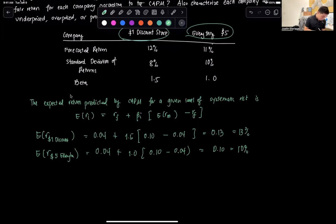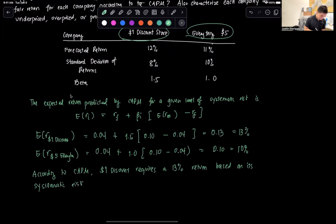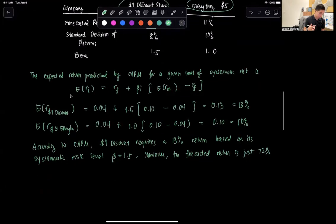So according to CAPM, Dollar Discount requires, based on this expected return predicted by CAPM, a 13% return based on its systematic risk level, which is the beta of 1.5. However, the forecasted return is just 12%. So if we're comparing 12% and 13%, which is what we computed for, therefore the security, that Dollar Discount, is overvalued.